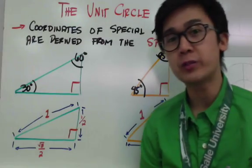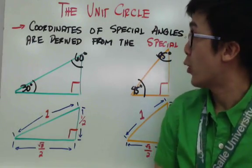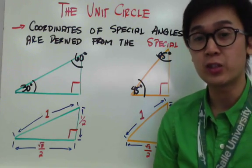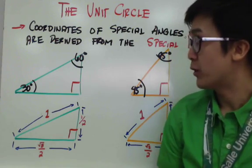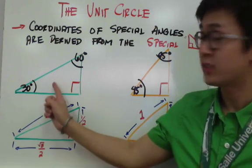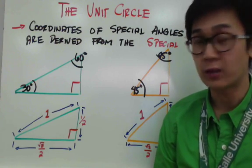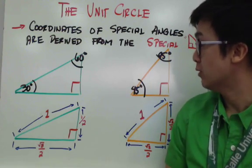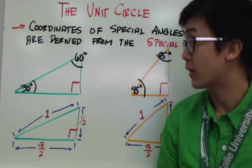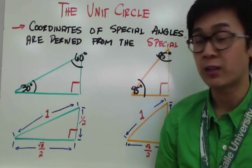Now let's derive the values of the coordinates in the unit circle. The coordinates of the unit circle come from the special right triangles that you've seen in geometry. The first special right triangle is the 30-60-90 degree triangle, and the second special right triangle is the 45-45-90 degree triangle.